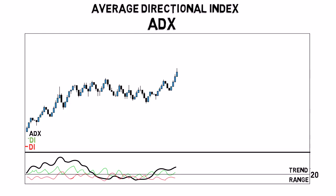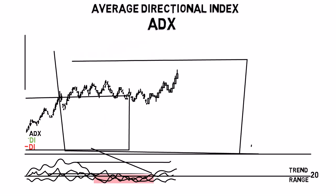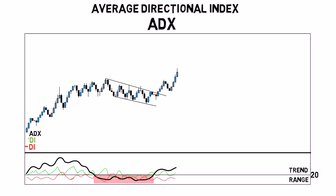When the ADX is below 20, you can trade range opportunities. You can use indicators like stochastic to look for overbought and oversold readings to determine your entries and exits. When the ADX rises above the 20 level, it signals that the consolidation period is over and you can start looking for breakouts and other trend-following strategies.